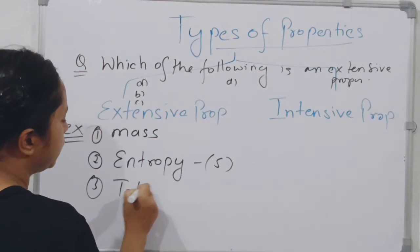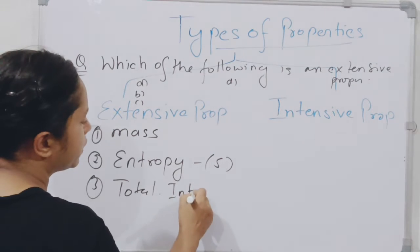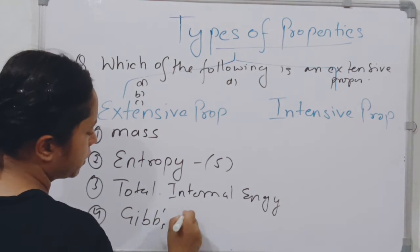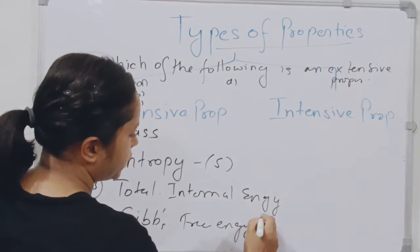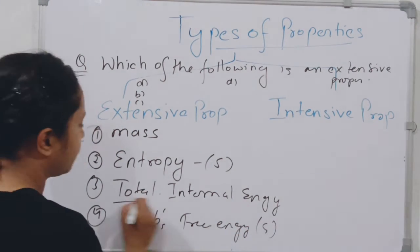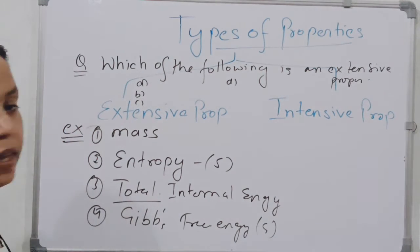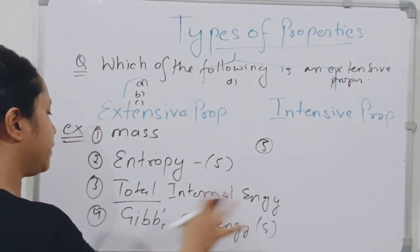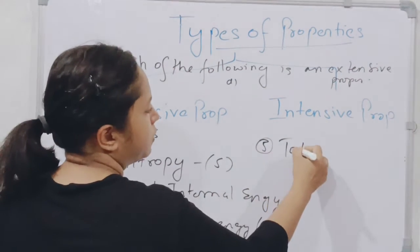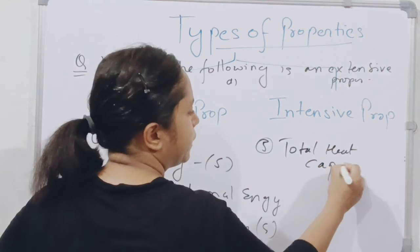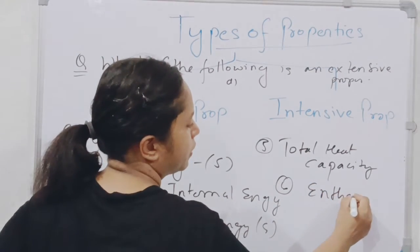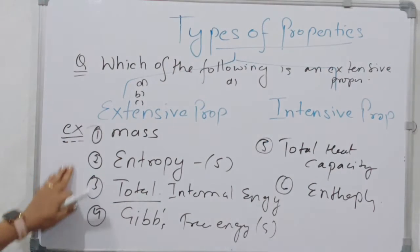Options a, b, c, and d. Mass, entropy S, total internal energy, Gibbs free energy G total, and total heat capacity, and entropy. These are extensive property examples.